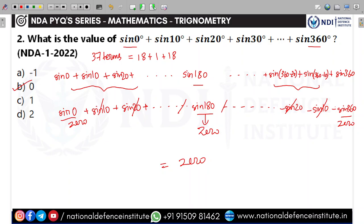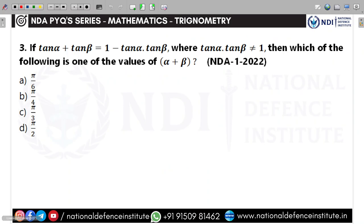Moving on to the next question. It asks: if tan α + tan β = 1 − tan α·tan β, which by now you must recognize as a familiar expression, then which of the following is the value of α + β? We can solve it very simply.